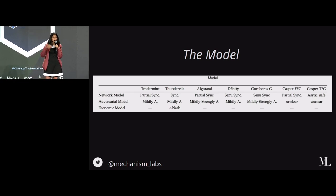The first of this model is the network model. The network model basically means what can you assume about messages being sent between different people or nodes in the network? Is there an upper bound on the time it takes for messages to get transmitted? Do you know what this upper bound is? All these different decisions relate to how permissioned or permissionless the protocol is.